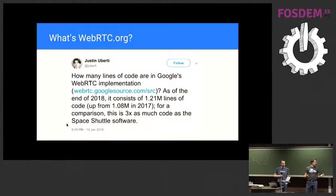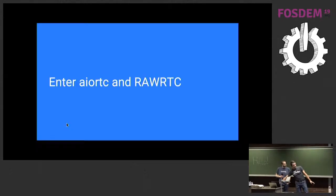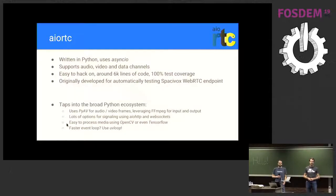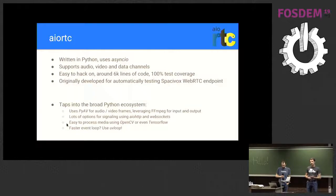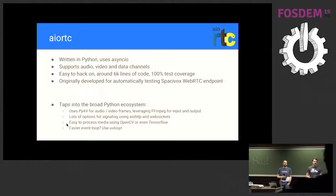So what can you do if you want a library that supports WebRTC for your own project? Luckily there are alternatives. We're going to talk about two different libraries. For my part I'll talk about AIO RTC, a WebRTC implementation written in Python. It leverages modern Python support for AsyncIO, supports audio, video, and data channels, and weighs in at around 6,000 lines of code — much more pleasurable to hack on, with full test coverage. AIO RTC started its life as a testing tool for my company's WebRTC endpoints and has grown significantly since.